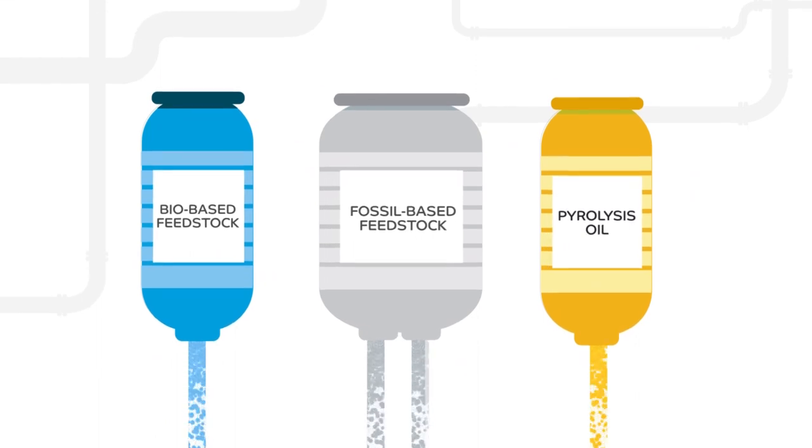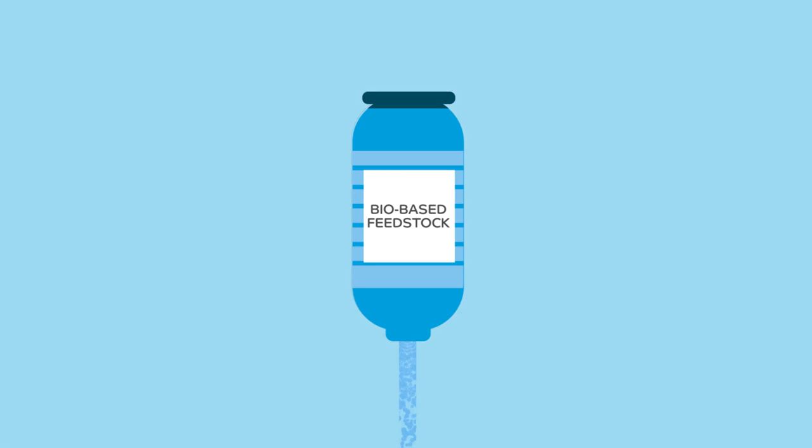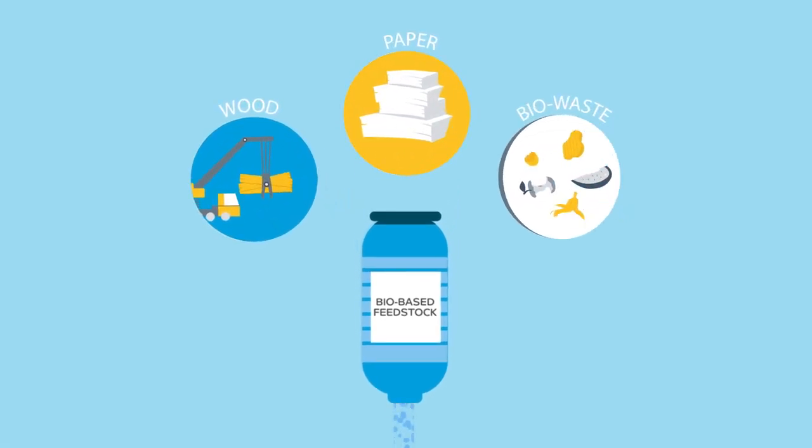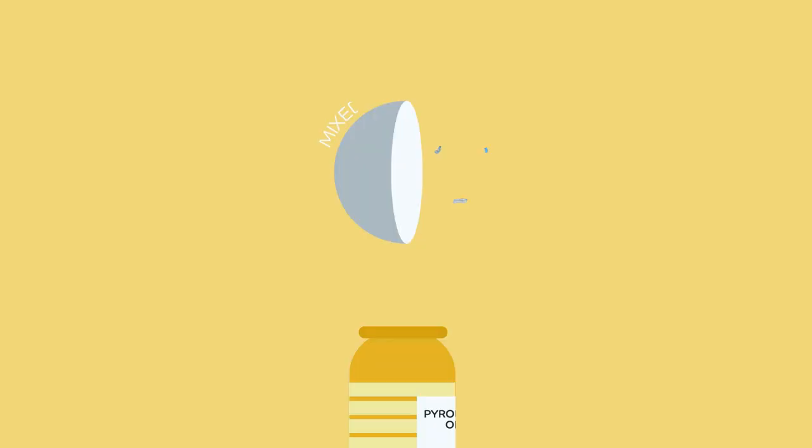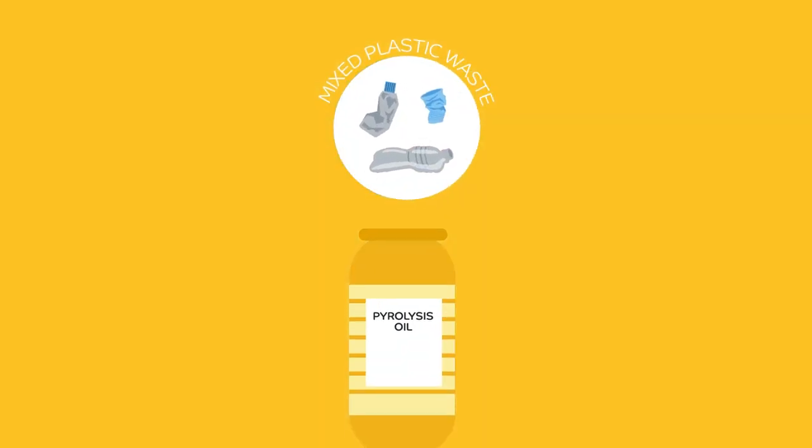We use two alternative feedstocks. One is bio-naphtha, a byproduct of wood and paper production processes or bio-waste. Another is pyrolysis oil, made from mixed plastic waste.